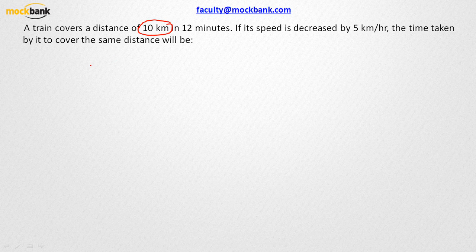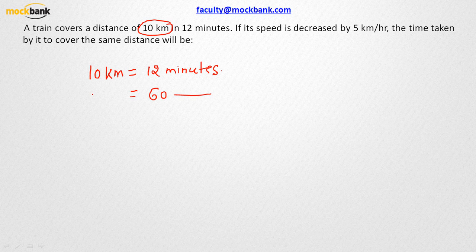So let us convert this into km per hour. If 10 km is being covered in 12 minutes, can you appreciate that in 60 minutes, this is going to be nothing but 50 km. And that is your speed—the speed of the train is 50 km per hour.